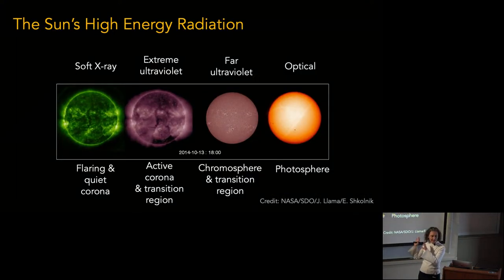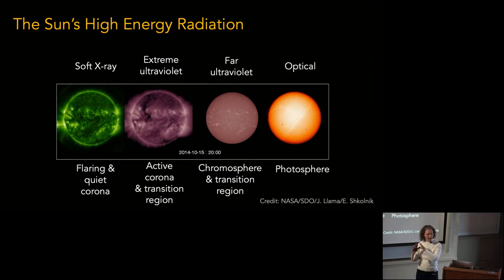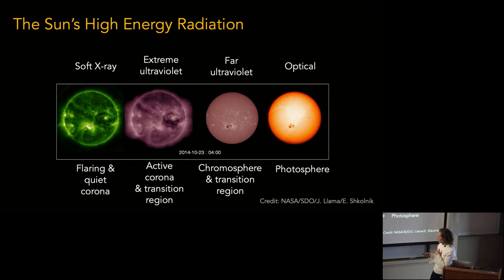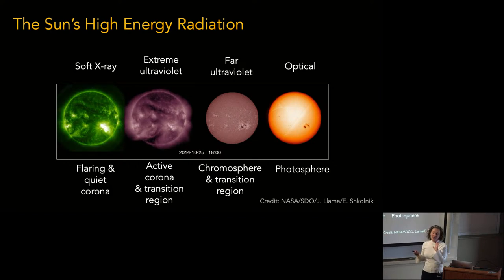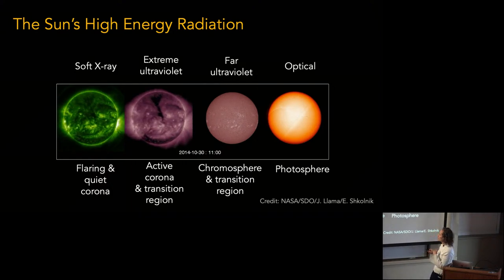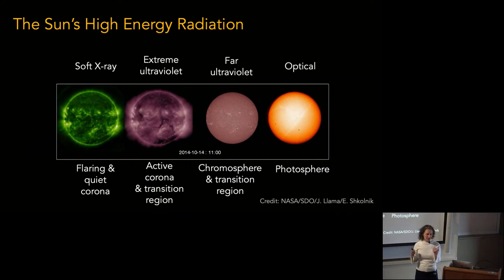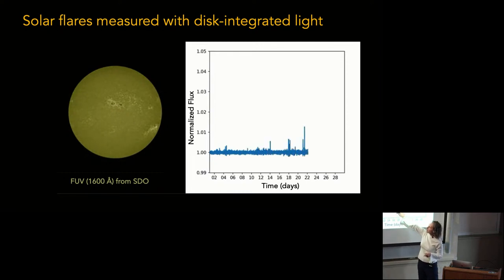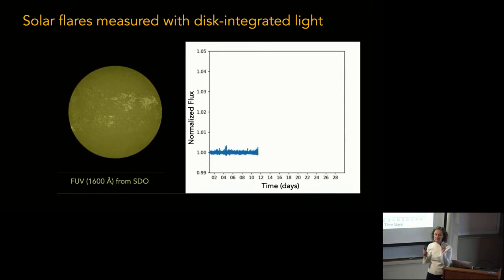We're going to take solar data in X-ray and far-UV — the two wavelengths we can readily look for flares in other stars — and correlate them with CME masses as detected by LASCO. Even though we have EUV data for the sun, we're not focusing on that because we won't have EUV data for our exoplanet hosts. So we're focusing on softer X-ray and far-UV, and not so much optical because optical doesn't trace coronal activity.